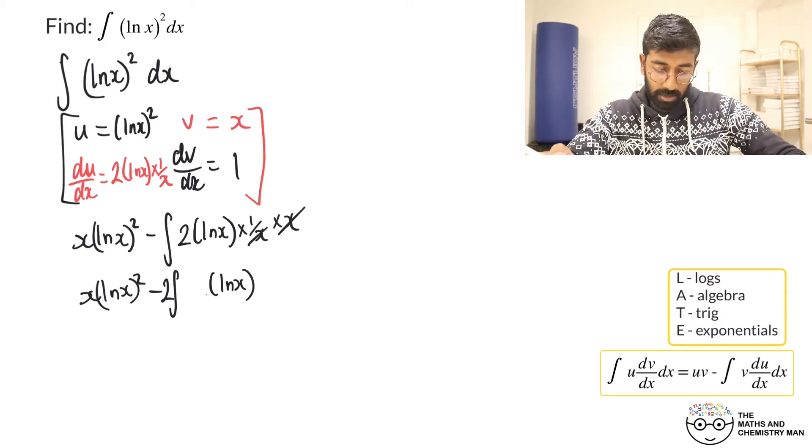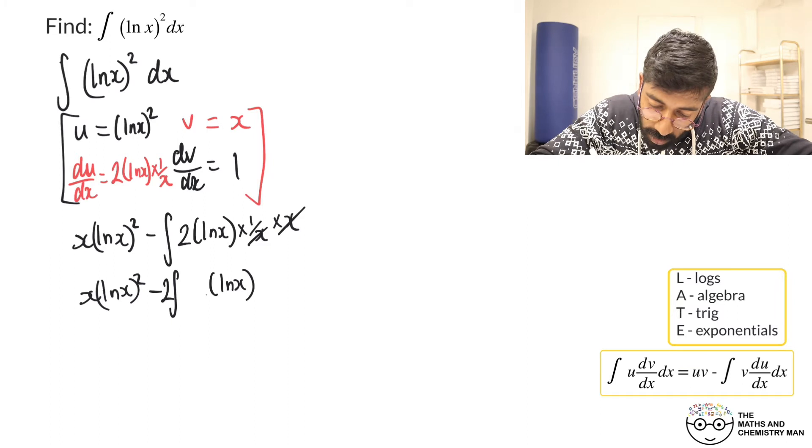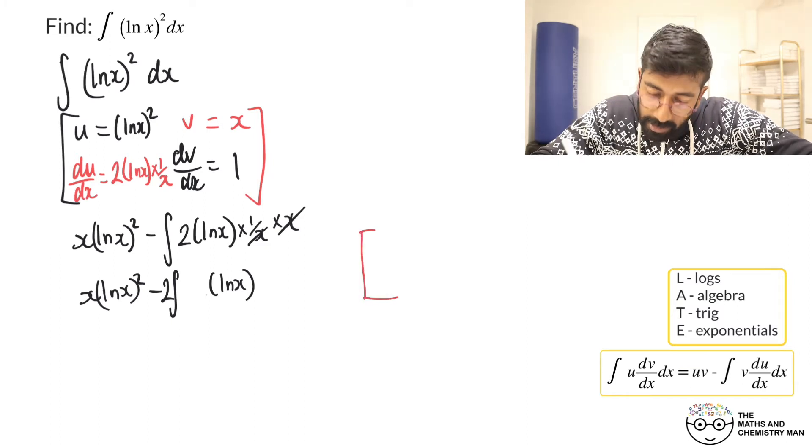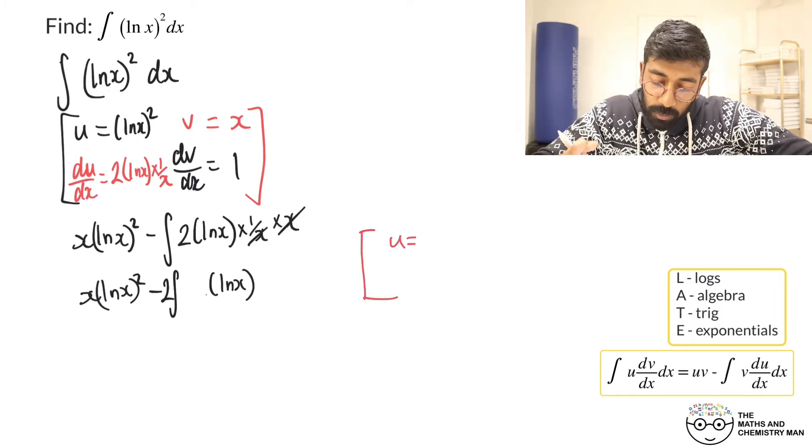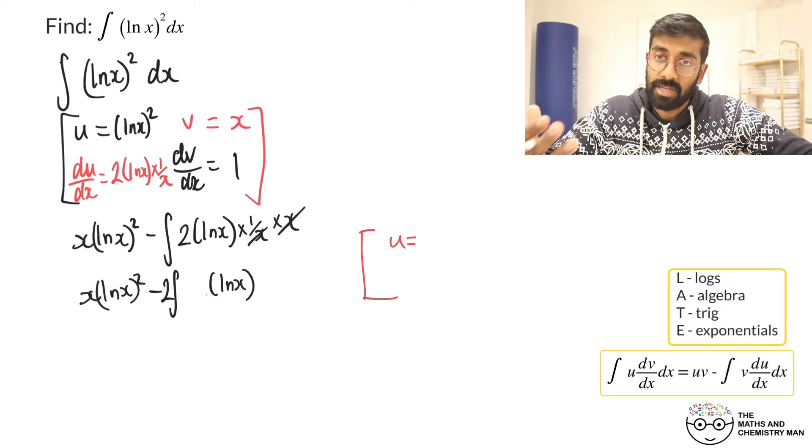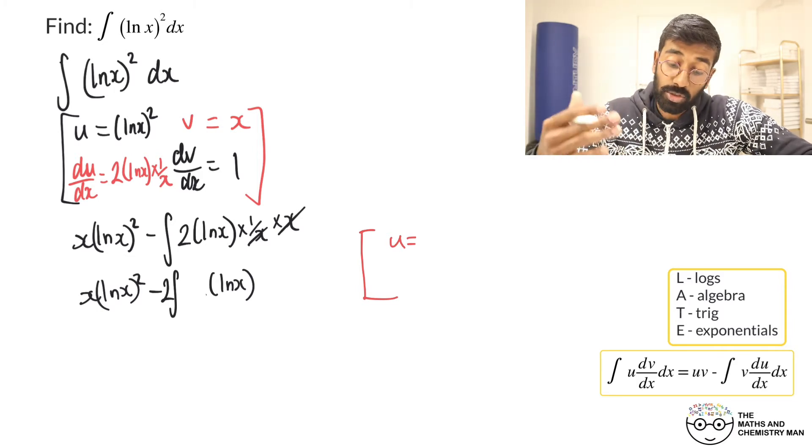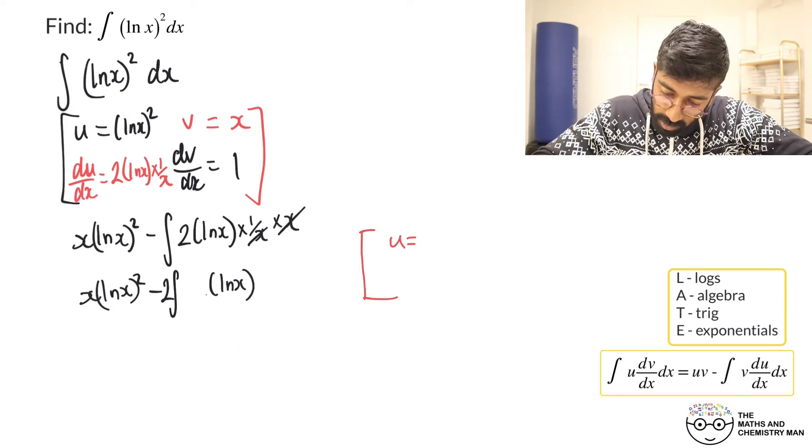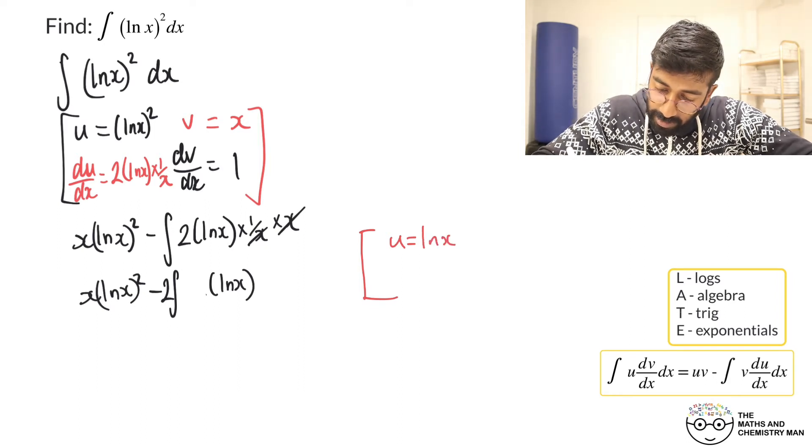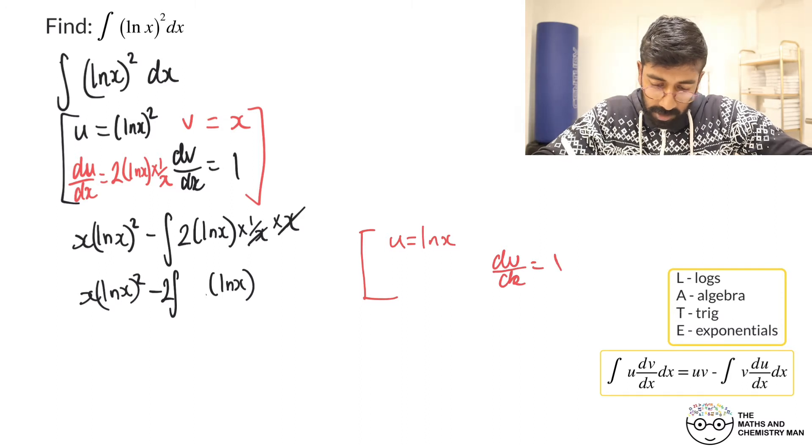I'm going to go to the side of my page just over here and let's set that up again. Now remember when you're integrating ln(x) you have to do by parts and you've got to pick u as ln(x). So u is ln(x) and dv/dx is going to be 1.